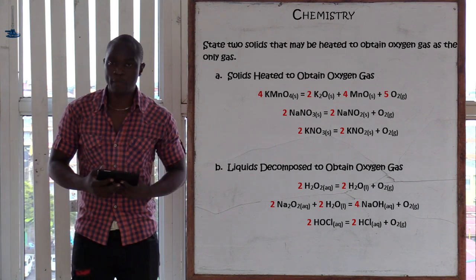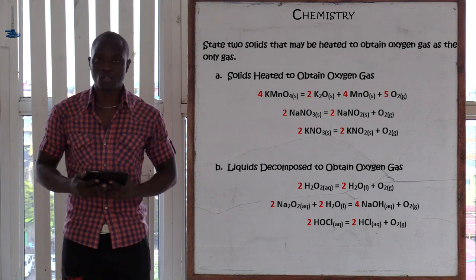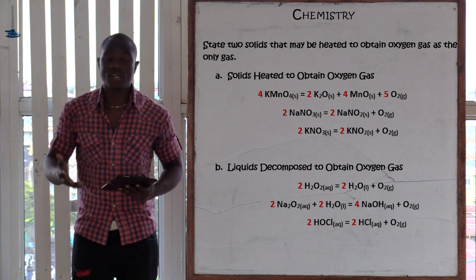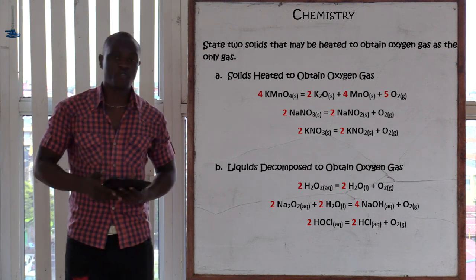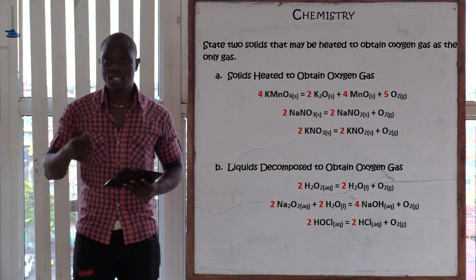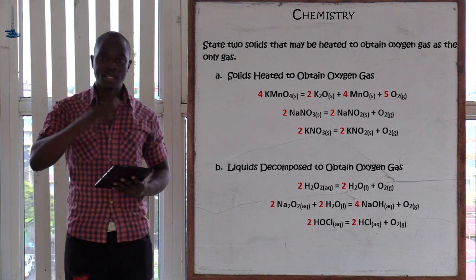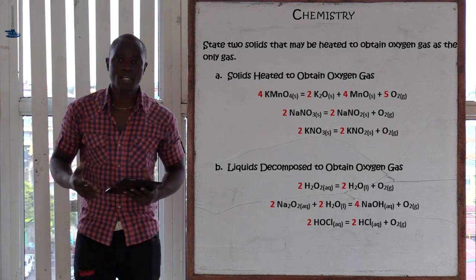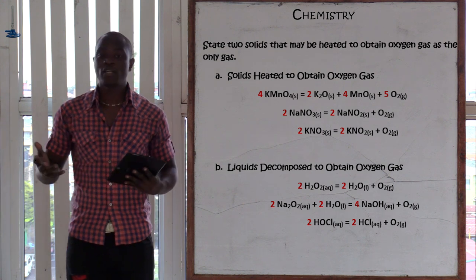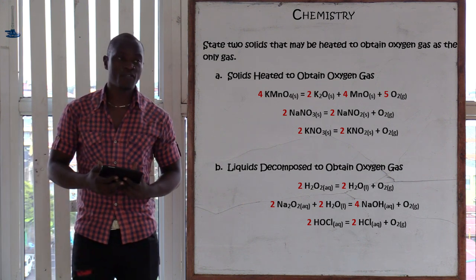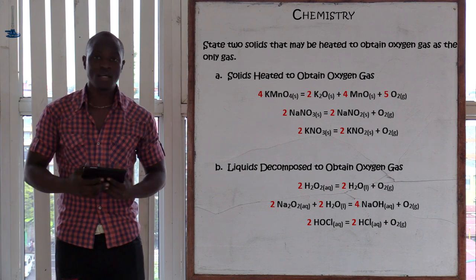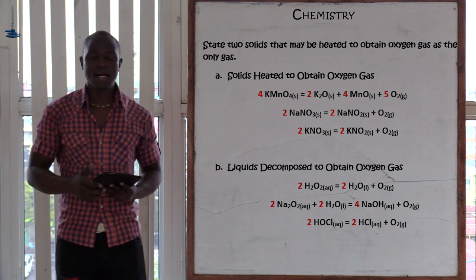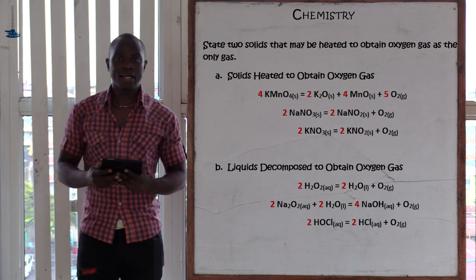For liquids that we can react to obtain oxygen gas only: hydrogen peroxide decomposes in the atmosphere to form water and oxygen gas only — hydrogen peroxide is a liquid. Apart from hydrogen peroxide, we have hypochlorous acid, which also decomposes in the atmosphere to form hydrochloric acid plus oxygen gas only.